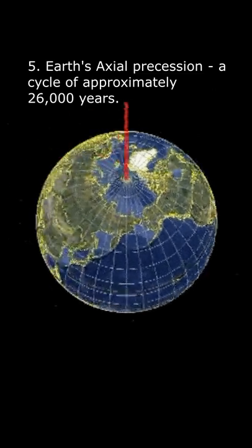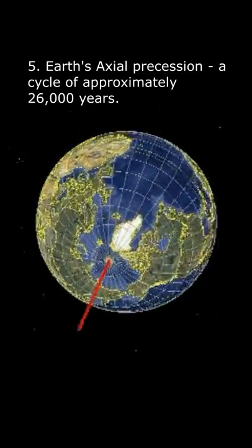There is a precession of the orientation of earth every 26,000 years or so.